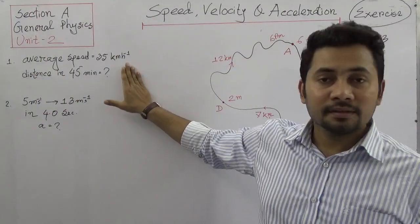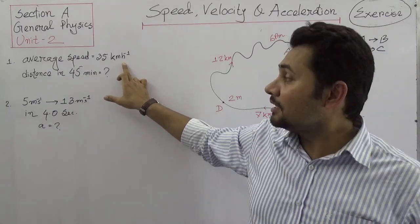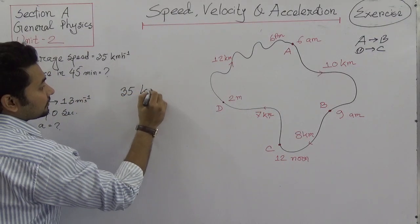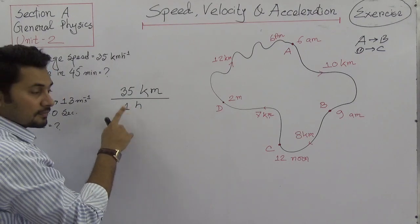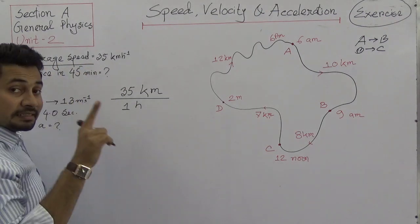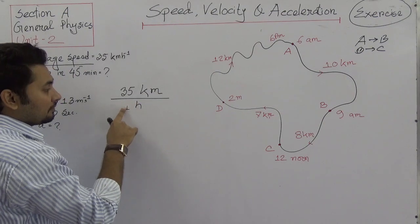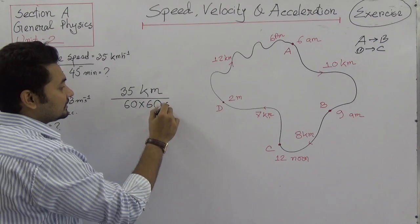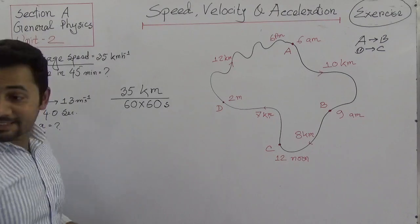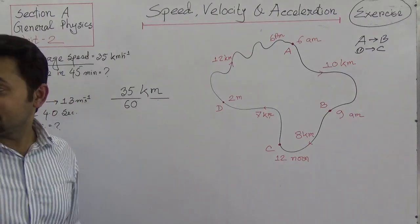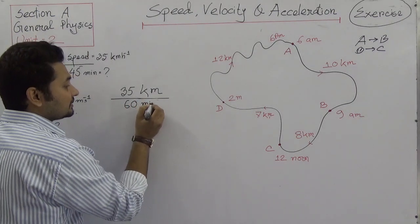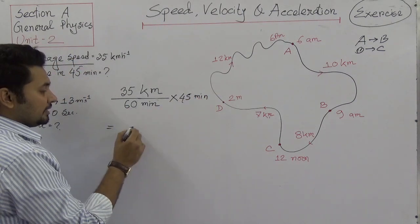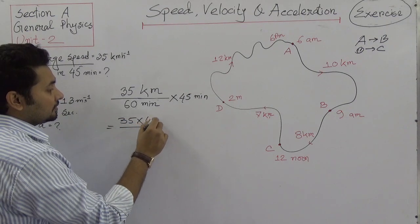Let's start with the first one. A car is travelling at 35 kilometers per hour average speed. What is the distance it will cover in 45 minutes? We can write this as 35 kilometers in one hour. We know there are 60 minutes in an hour. So in 45 minutes, we need to know how far it travels. It travels 35 kilometers in 60 minutes, so what will it travel in 45 minutes? We multiply 35 by 45 divided by 60.